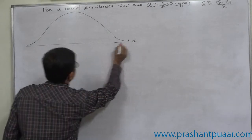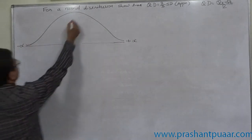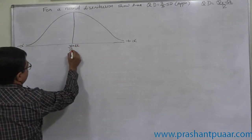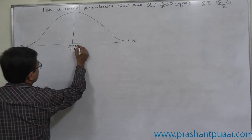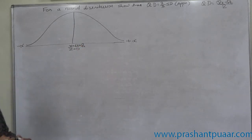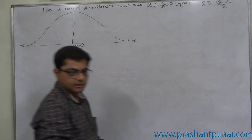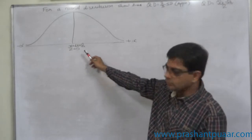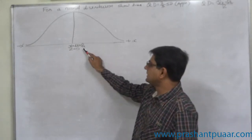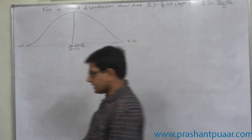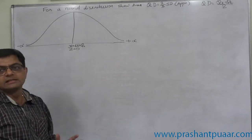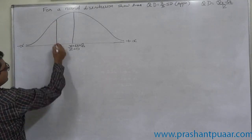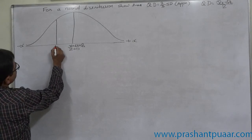Let us draw the diagram. We know that in a normal distribution, mean, mode, and median are equal. The median is nothing but our second quartile, so Q2 is exactly in the center of the data. The first quartile is less than Q2, so it lies on the left-hand side area.